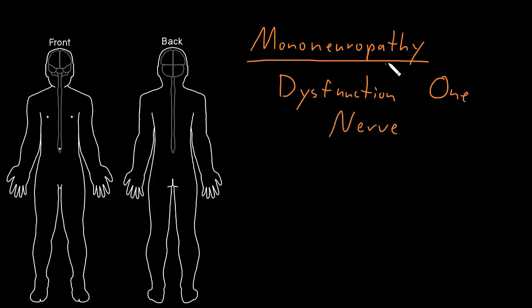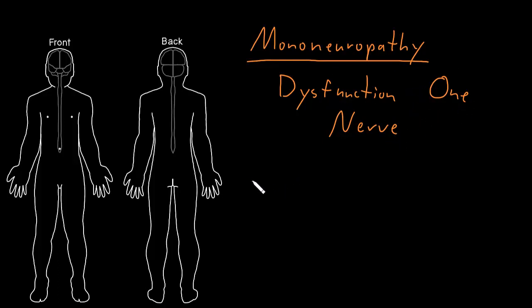Mononeuropathies are a focal problem of the nervous system and not a diffuse problem. Like when we were talking about polyneuropathy — poly meaning many — that's diffuse dysfunction of nerves. But this is focal dysfunction because we're just talking about one nerve not working properly. And with dysfunction of one nerve, we can have abnormalities related to the three types of axons that travel in nerves.